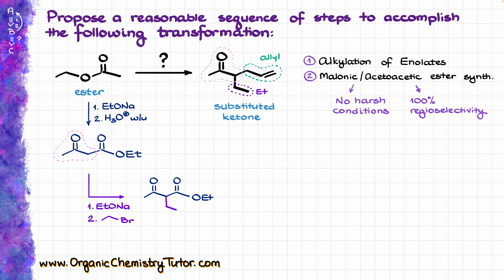Now in order to add the allyl group, I'm going to do the same trick — I'm going to enolize my molecule first and then I'm going to add allyl bromide to do the substitution and get the following product where I have added both of my groups to my molecule. I have my ethyl